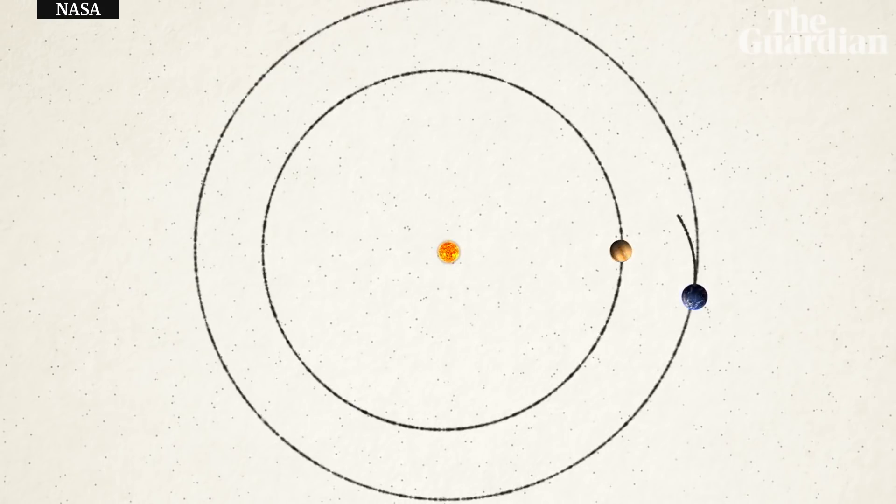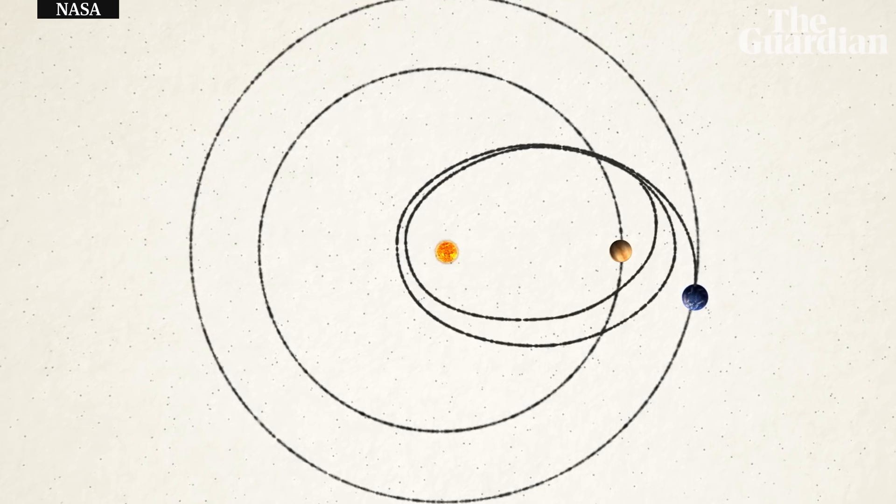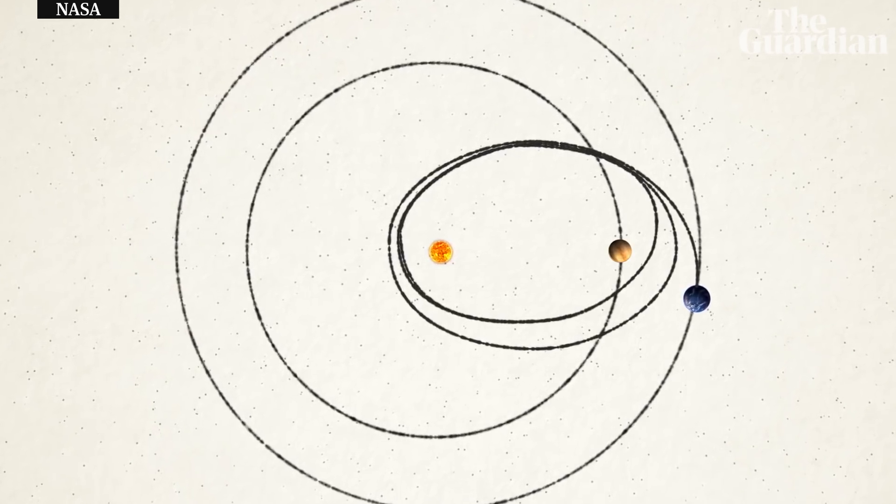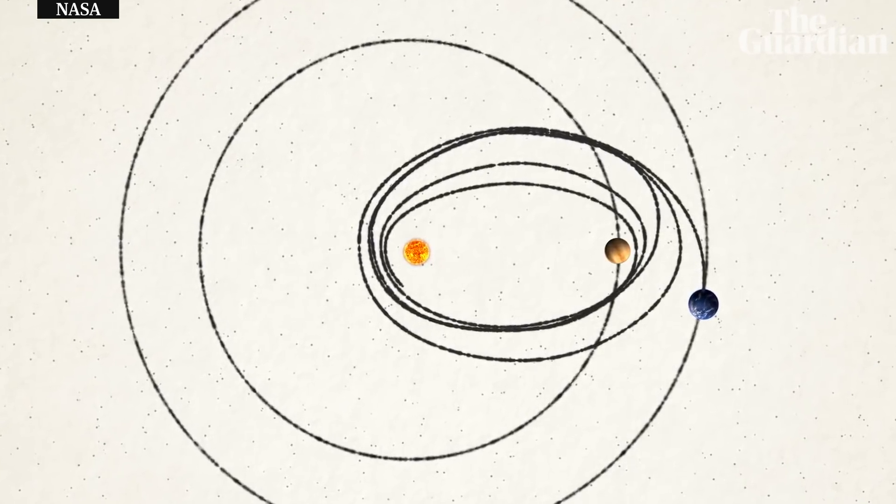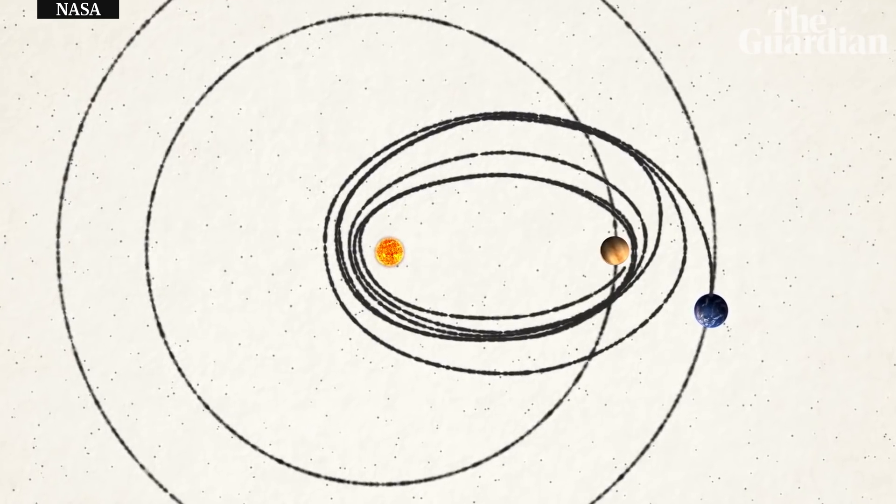Since Parker Solar Probe plans to fly past the Sun, it doesn't need to cancel out all of Earth's sideways speed, but it does need to remove 53,000 miles per hour of it. That's why it's using one of the most powerful rockets available, and additional gravity assists from Venus, over a period of several years.